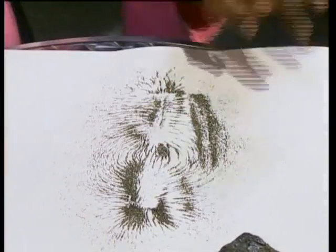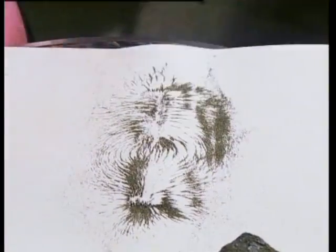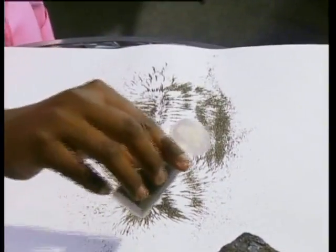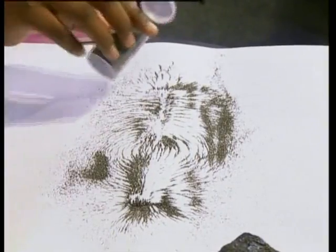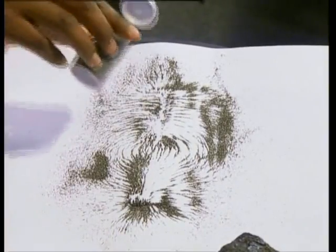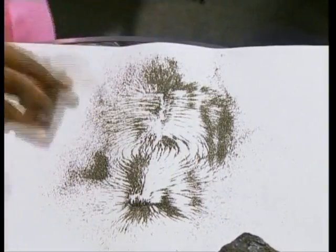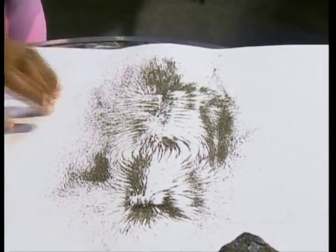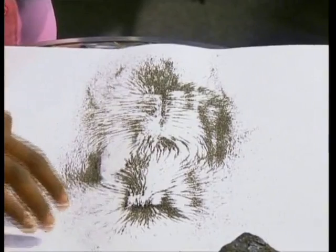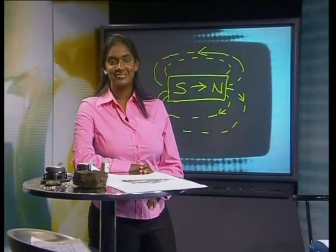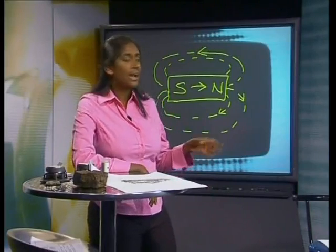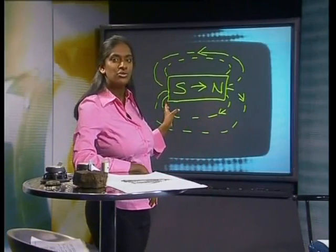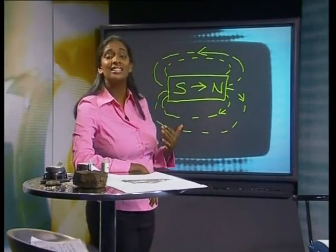The iron filings are very close together around the ends of the magnet. But further away from the magnet, the iron filings spread out. The iron filings form a pattern of curved lines. The lines seem to connect one side of the bar magnet to the other side. I'm sure you'll agree that the pattern the iron filings form is very similar to the pattern of field lines we drew to show the magnetic force field.